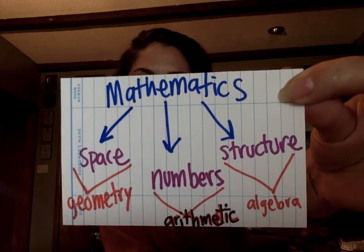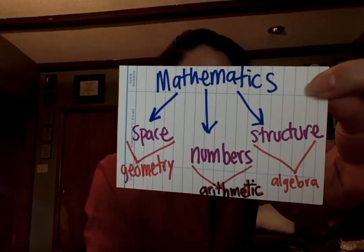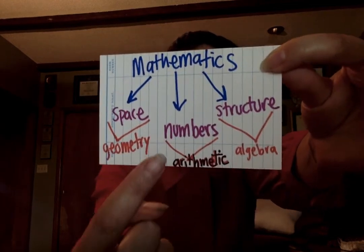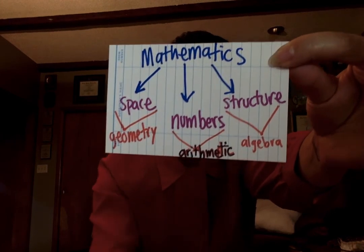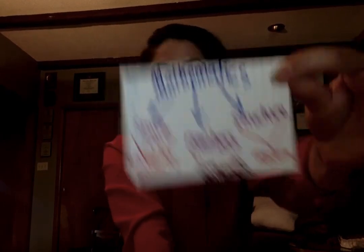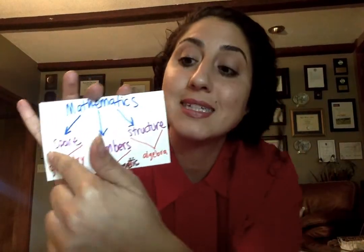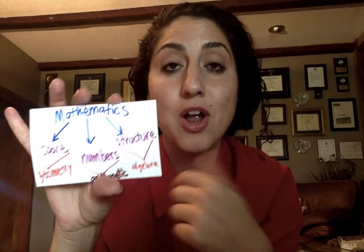Claiming that logic is the study of how we ought to reason is really similar to claiming that the study of mathematics is all about numbers. There's so much more to mathematics and there's so much more to logic. In mathematics, you have different ways of studying the relationship between things. You can do geometry by studying the way things are related spatially, study quantity and number theory — that's doing arithmetic — or study algebra and structures, maybe shapes. All of these are mathematics.